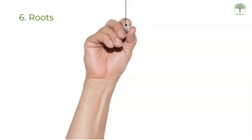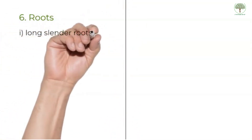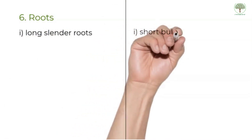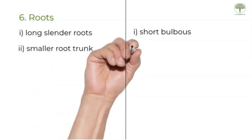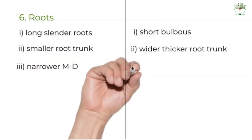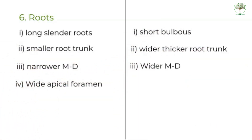The primary teeth have long, slender roots which flare widely. This is to accommodate the developing permanent tooth bud. The permanent teeth have short, bulbous roots. The primary teeth have a shorter root trunk, meaning that the furcation area is very close to the cervix.